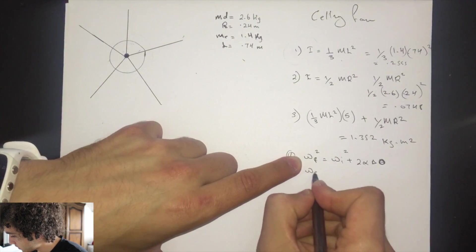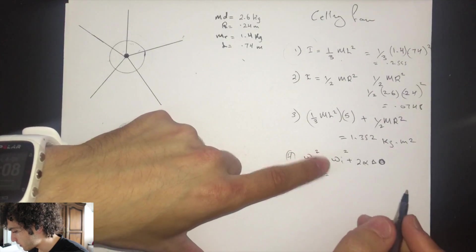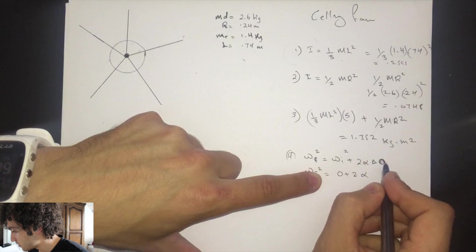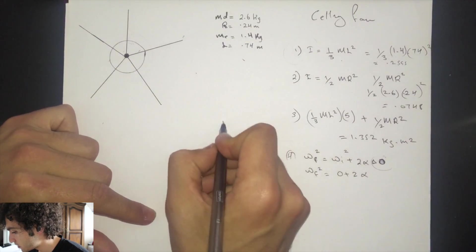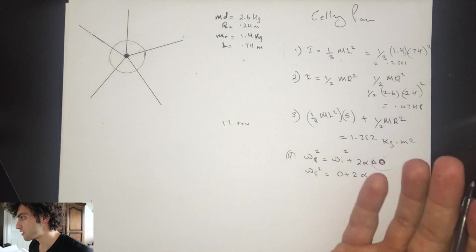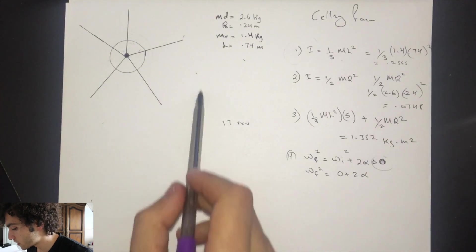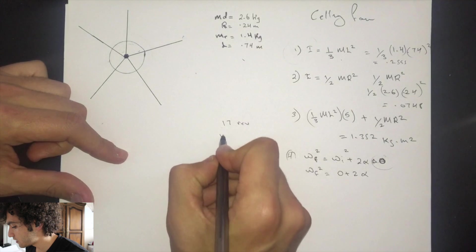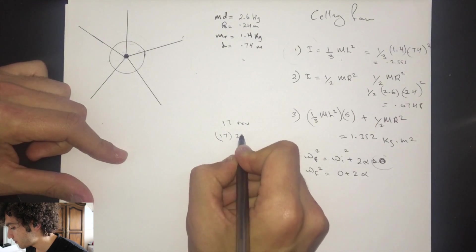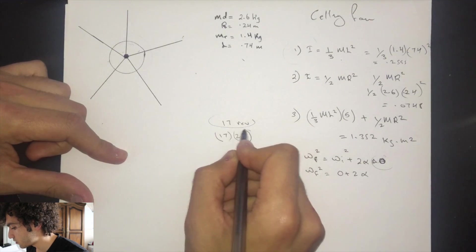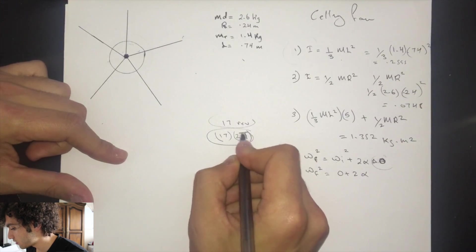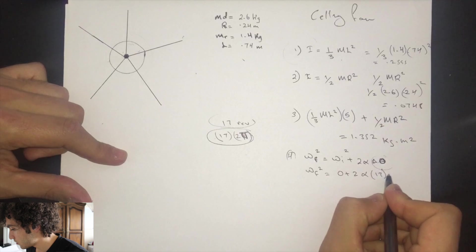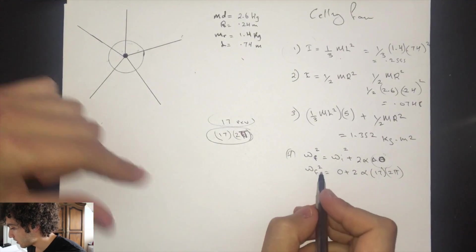We don't have omega final squared, and the initial angular velocity is zero, so it simplifies to: zero plus two times angular acceleration times delta theta. The 17 revolutions need to be in radians, and each revolution is two pi radians, so delta theta equals 17 times two pi, which is 107.2 radians.